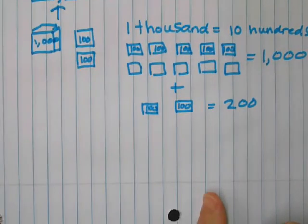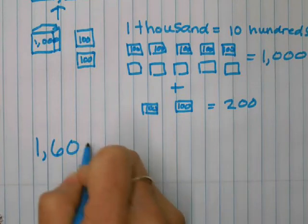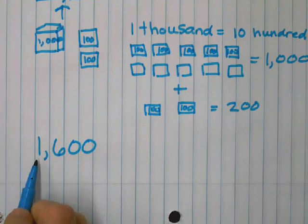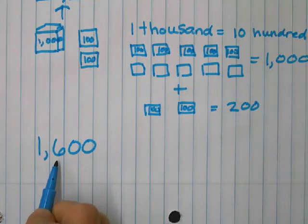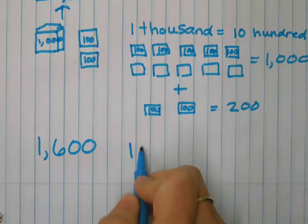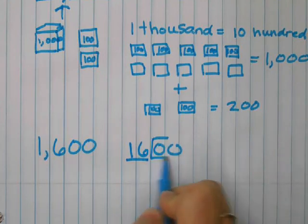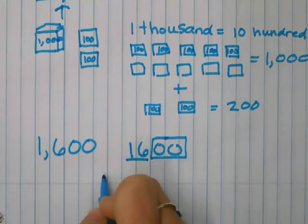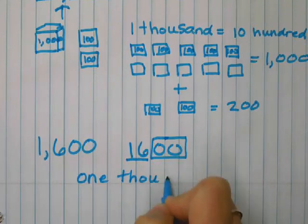Let me show you another one. How about 1,600? I say one, get to the comma, say thousand, and then 600. If I write that number without the comma, I'm going to read it as sixteen hundred. I could also write it as sixteen hundred.